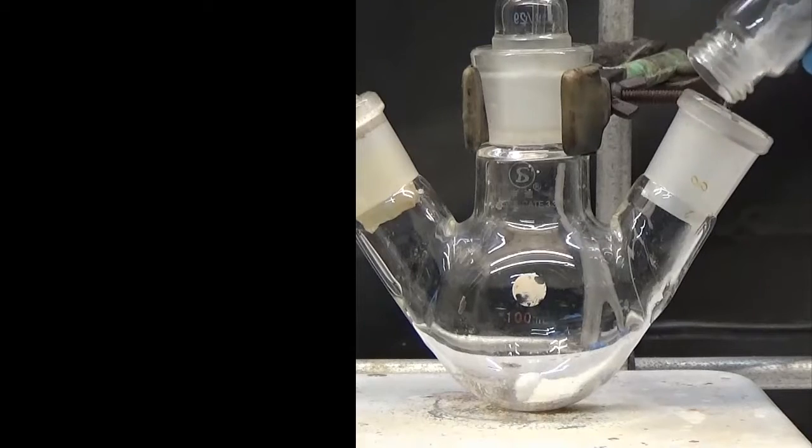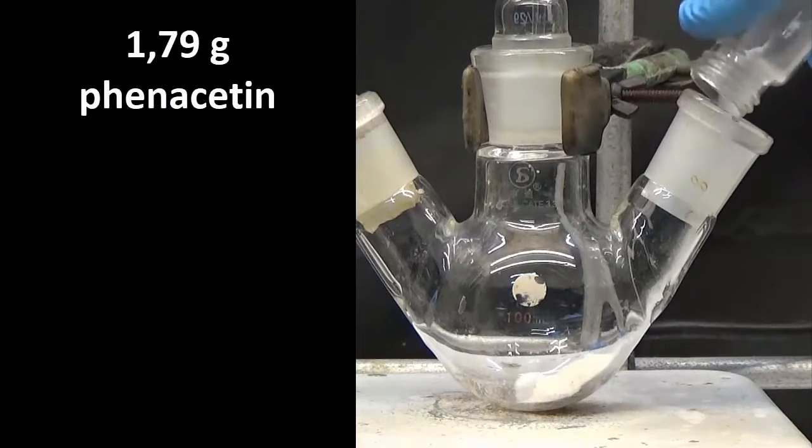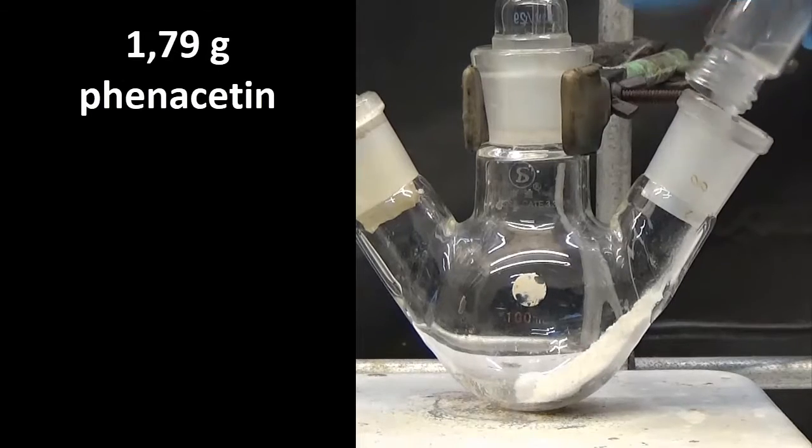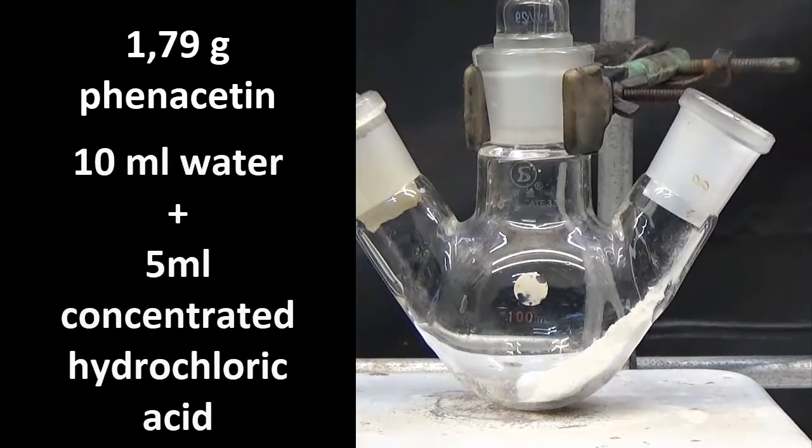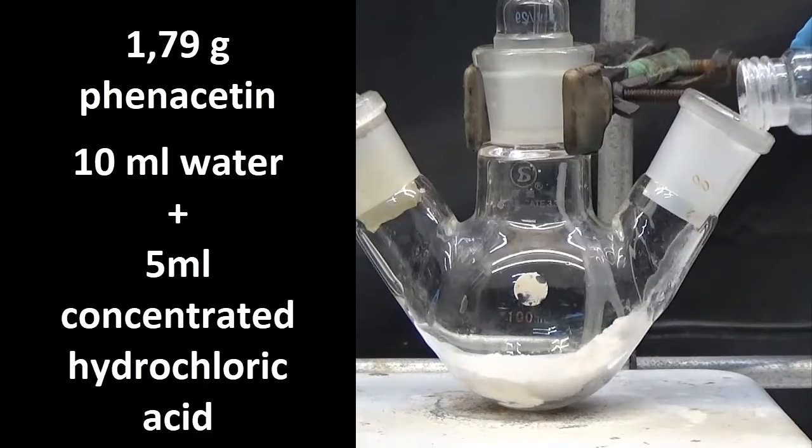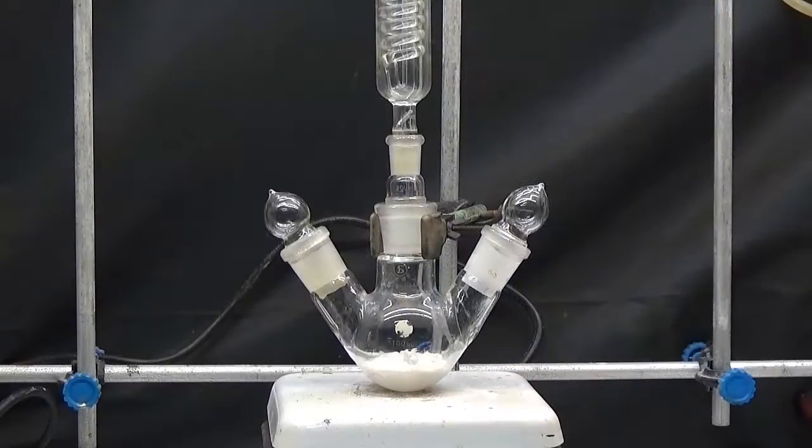For this operation, we will put 1.8 grams of phenacetin into a 50ml flask with three necks. We added a 5ml solution of hydrochloric acid concentrated in 10ml of water and heated under reflux with agitation until total dissolution of the solid.